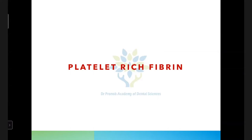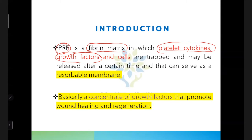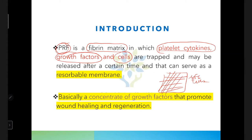First we'll start with platelet-rich fibrin. What is platelet-rich fibrin? It is also called PRF. PRF is a fibrin matrix in which there are platelet cytokines, growth factors, and cells. There is a fibrin meshwork, and on this we have different growth factors, cells, and platelet cytokines. These cells and growth factors are all trapped in a fibrin matrix and are released after a certain time.